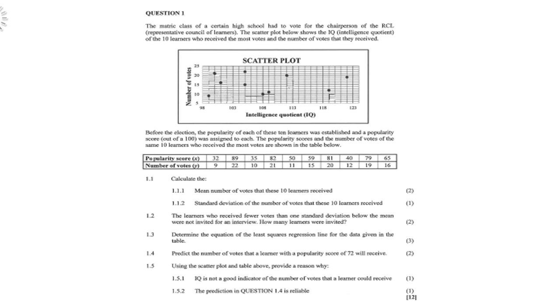So this is a scatter plot and before the elections, the popularity of each of these 10 learners was established and a popularity score out of 100 was assigned to each. The popularity scores and the number of votes of the same 10 learners who received the most votes are shown in the table below.